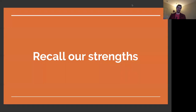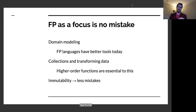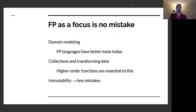I want to recall some of the strengths we have. These FP-focused languages are no mistake. Functional programming languages give us better tools to model domains. We understand that when programming you're likely working with collections of data you'll be transforming, and higher-order functions are really good for that. List combinators and sequence combinators, having a standard library that allows this sort of stuff — it's essential. You model a domain separated from your functionality and operate on data that is constructed as a domain model. Immutable data means fewer mistakes.